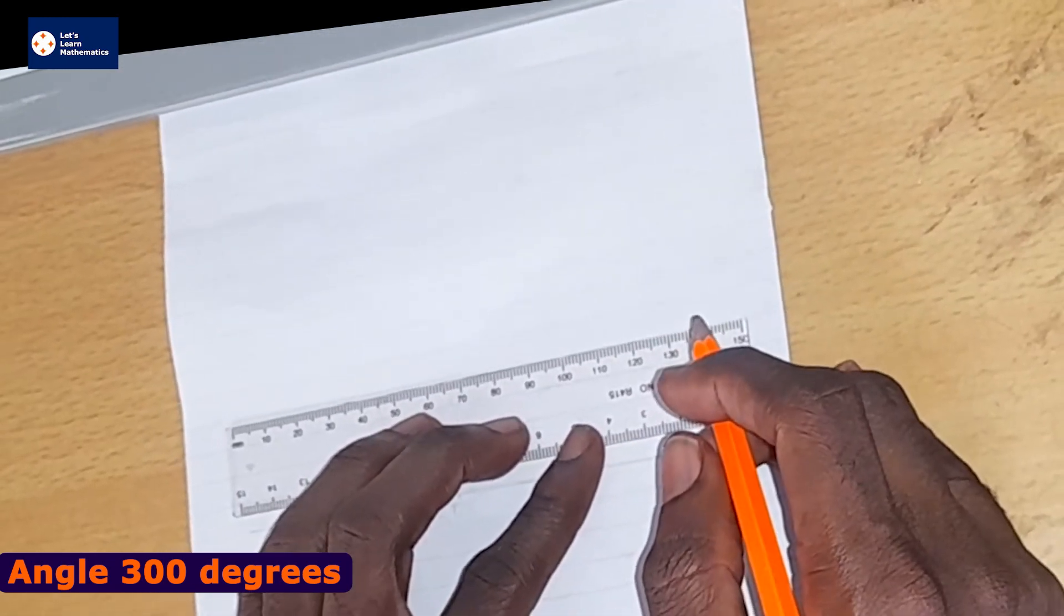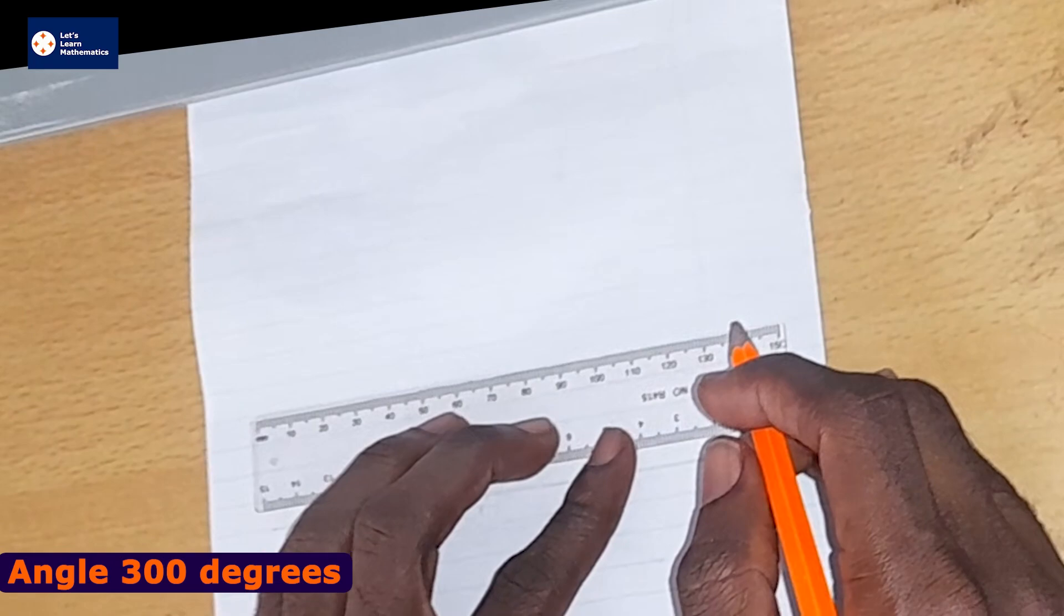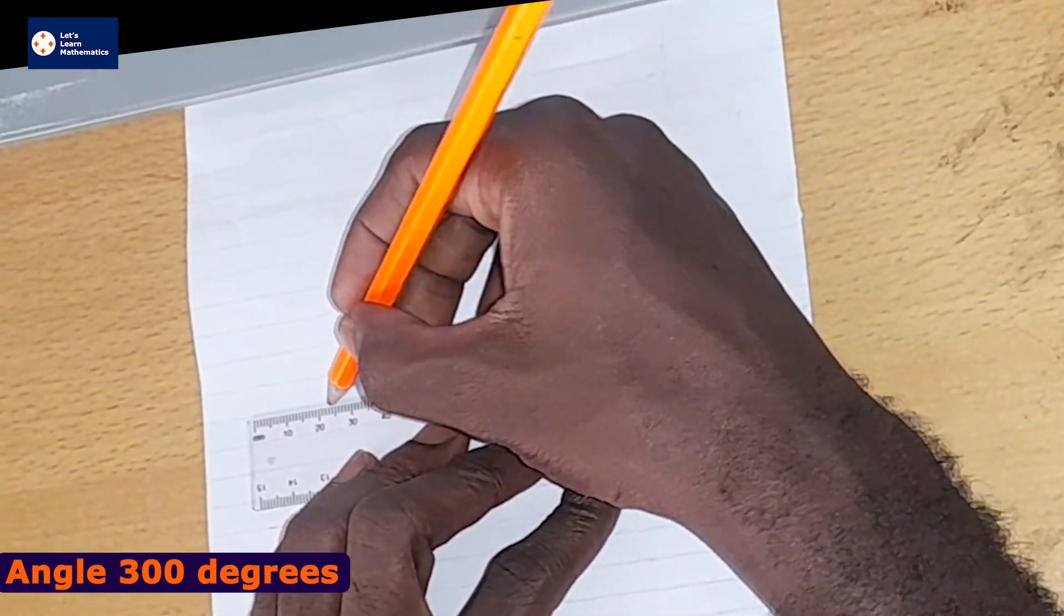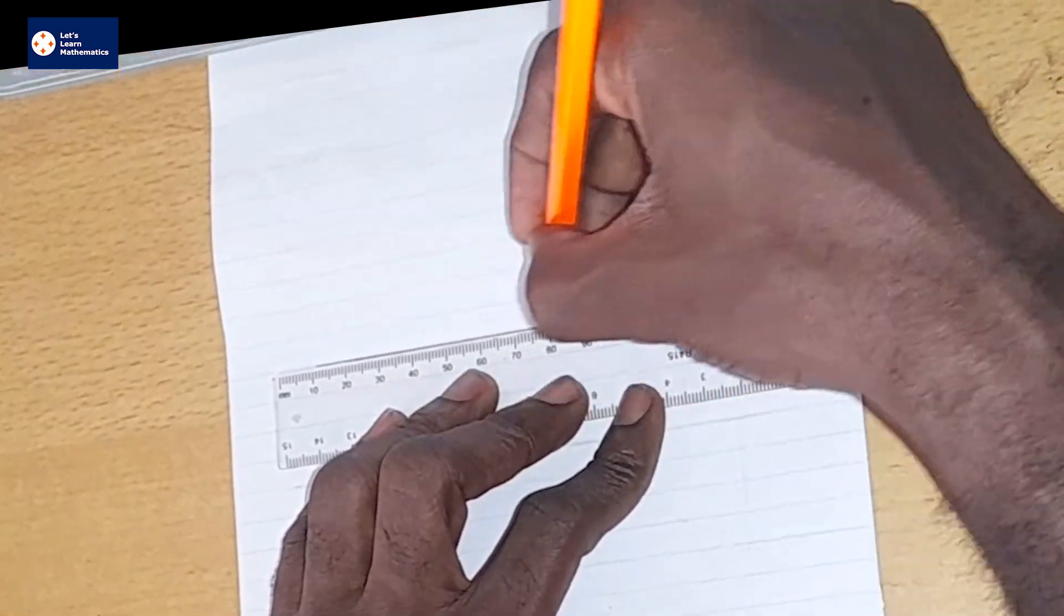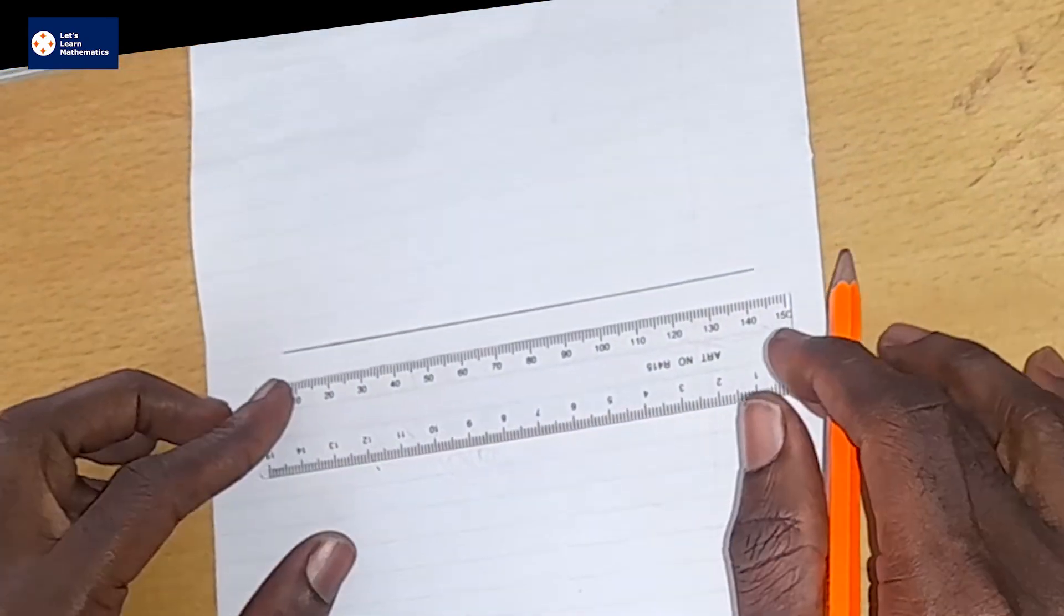we first need to draw a straight line, as we have learned. To be able to draw any angle, the first thing we draw is a straight line. So I have drawn my straight line.